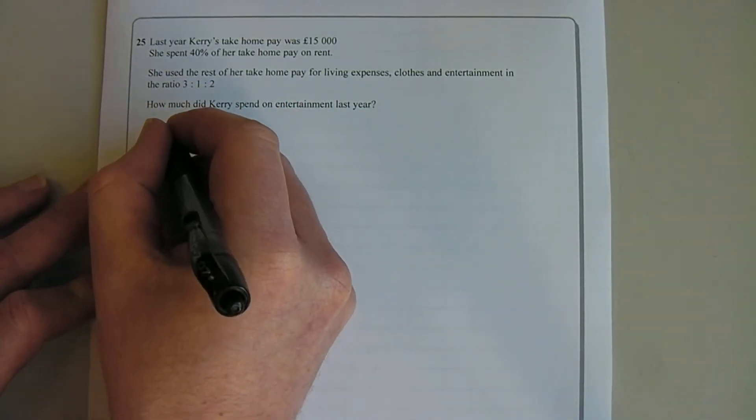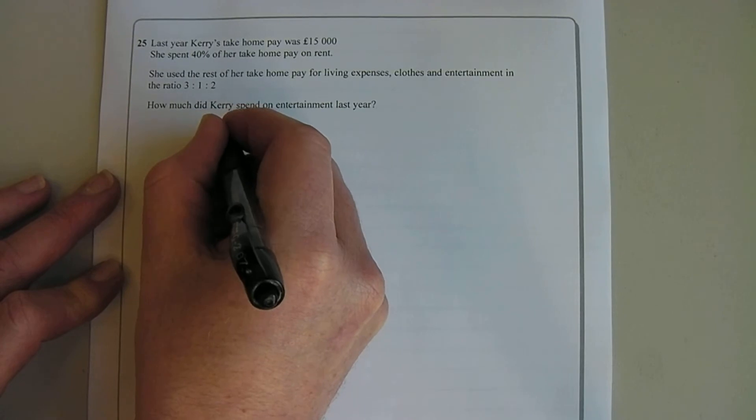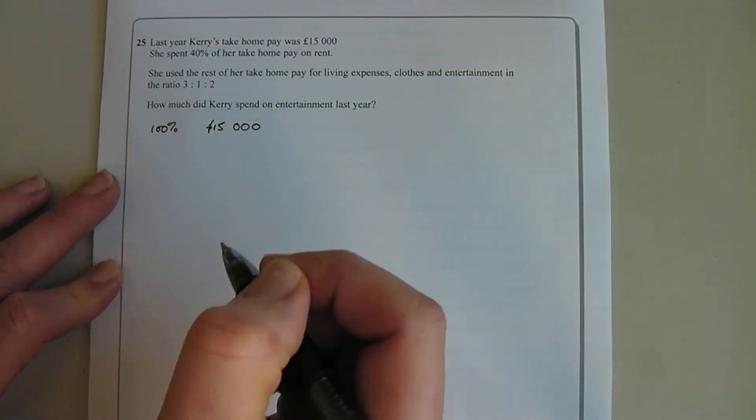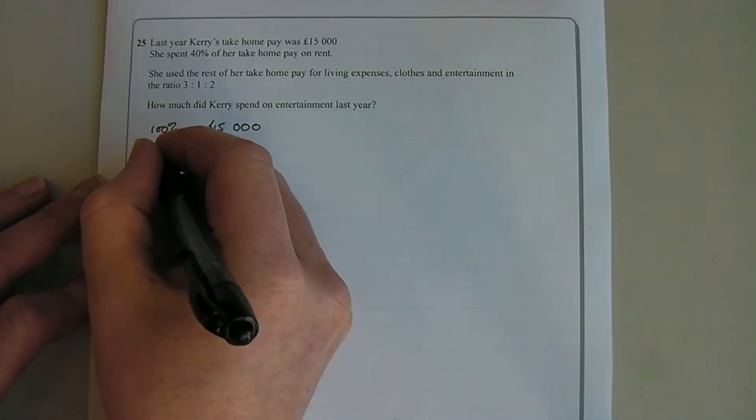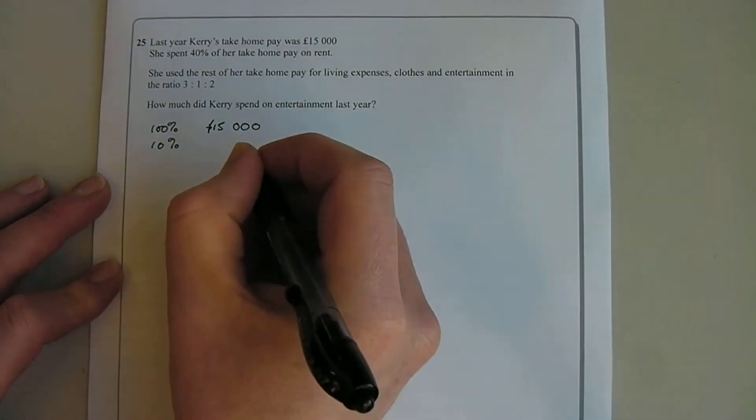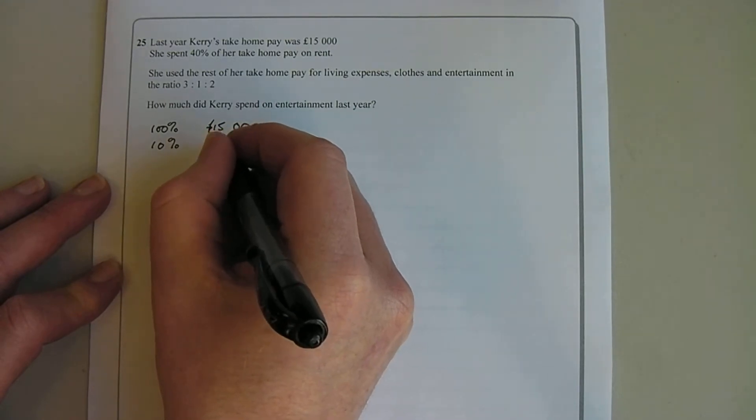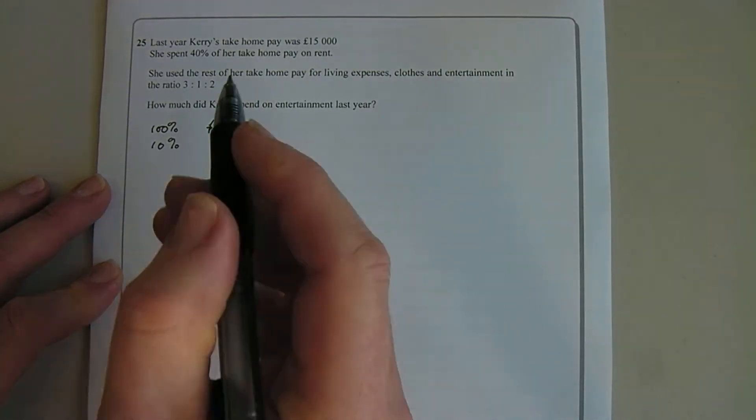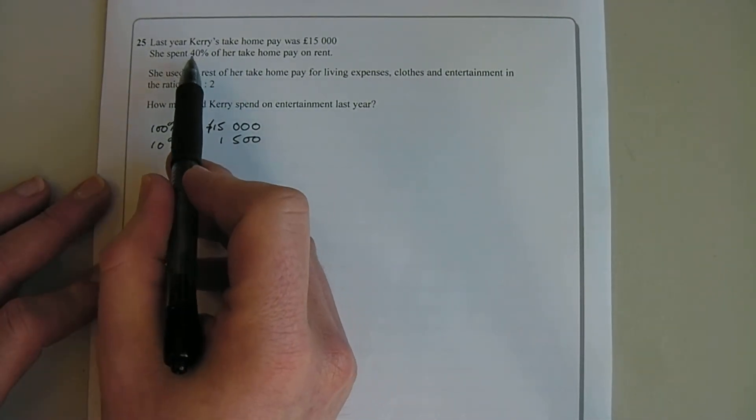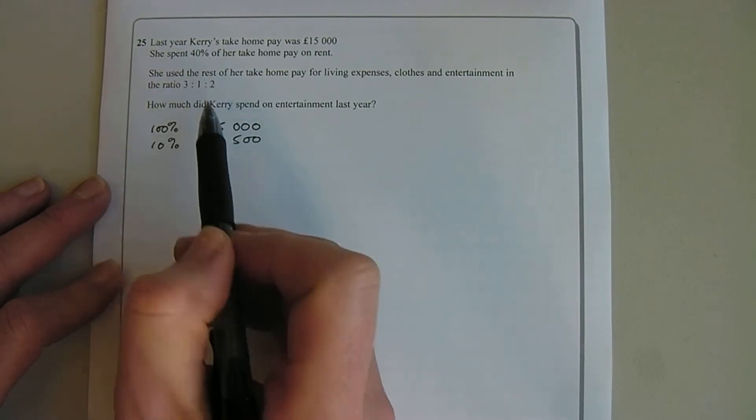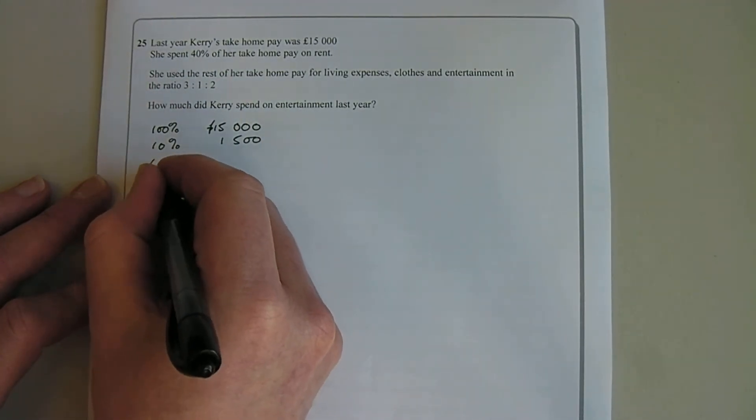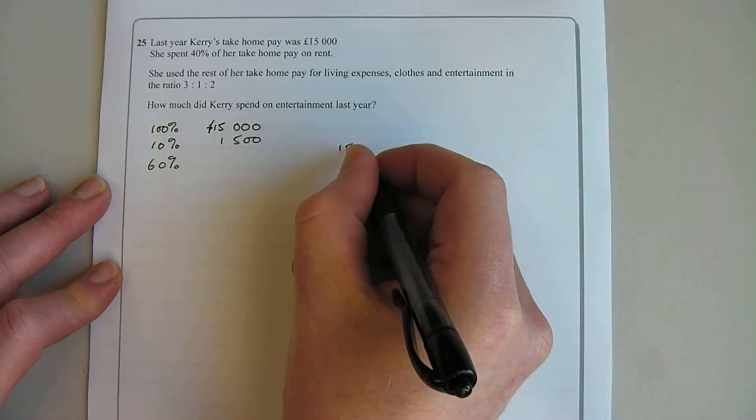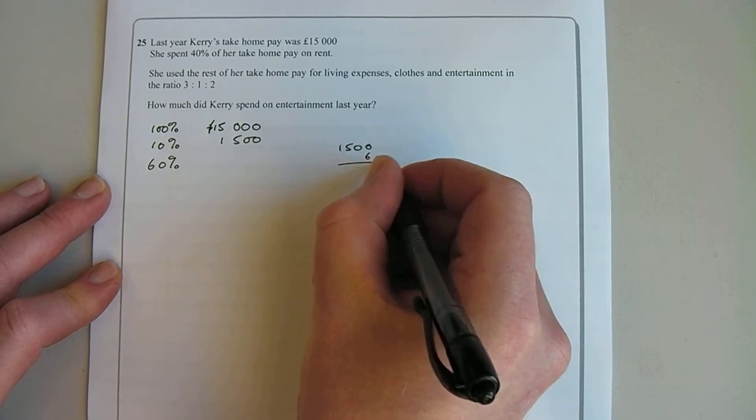So we've got £15,000. £15,000 is 100% of her wages. So if I said, well, let's have a look at 10% of her wages, that would be £1,500. And so we're looking to find 60% of her wages because she's going to spend 40% of them on rent. So 60% is used for everything else. So 60% of her wages is 6 times £1,500. So I could just do a little sum at the side if I couldn't do it in my head.